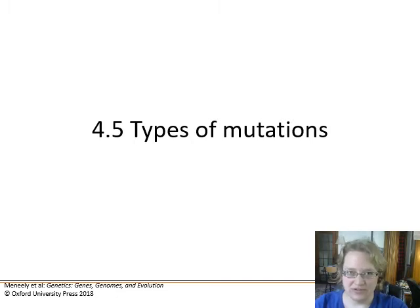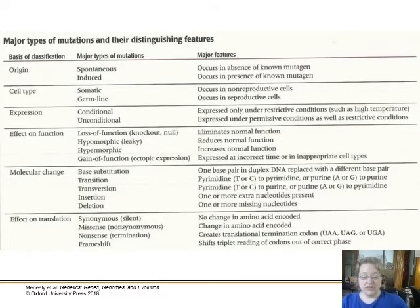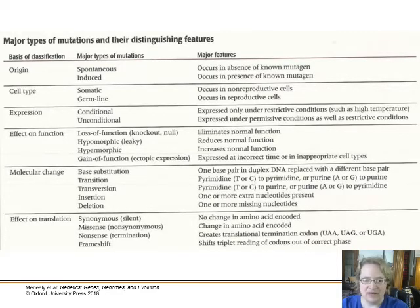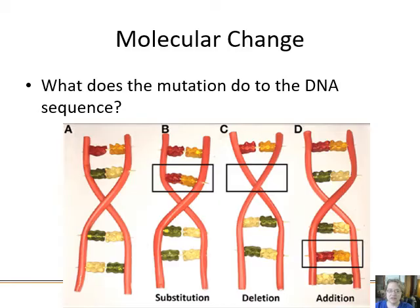Now we'll look at types of mutations. We're going to focus on the origin — whether a mutation is spontaneous or induced — what kind of cell it's expressed in (somatic or germline), the molecular change to the DNA, and the effect on translation: whether it's silent, missense, nonsense, or a frameshift. There's a visual here made of gummy bears, toothpicks, and Twizzlers illustrating substitution, deletion, and insertion.